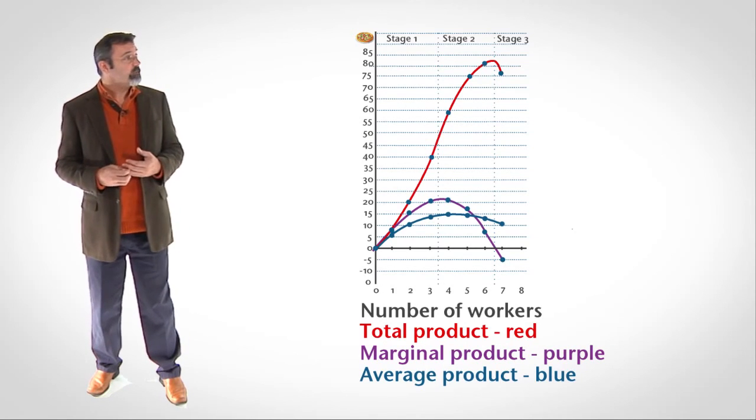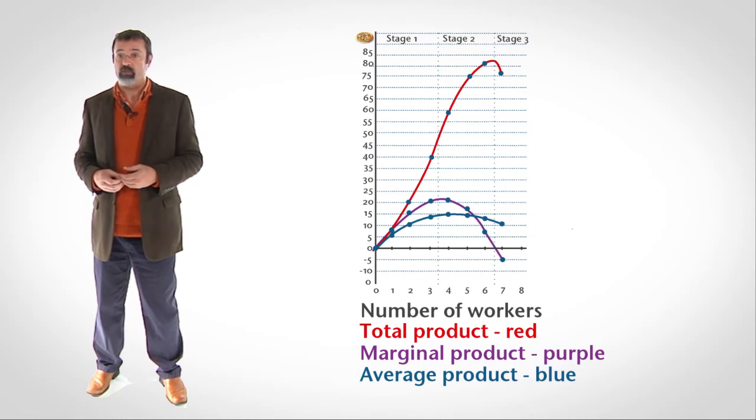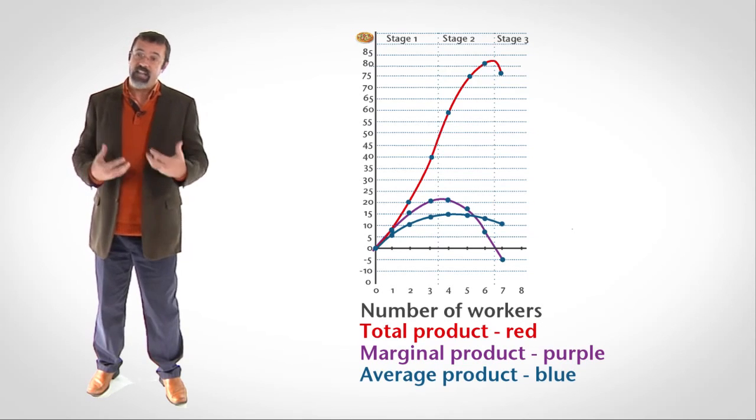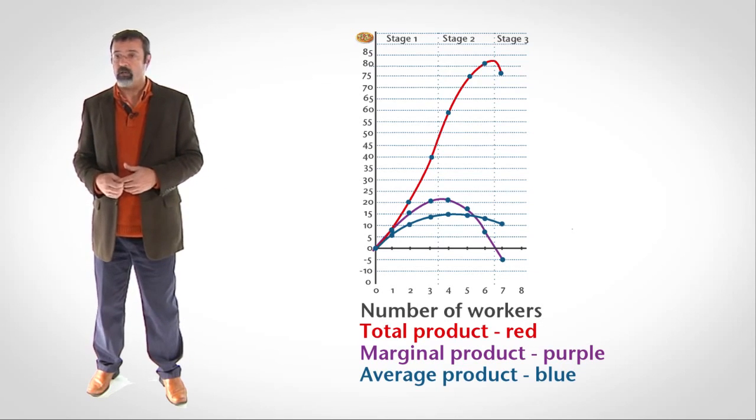In Stage 3, marginal product is negative, meaning that adding workers causes output to decline. This pulls down the average product and also causes the total product to decline. What motivates firms is profit. To understand profit, we first have to understand how firms transform inputs into output. Average product and marginal product help to explain this.